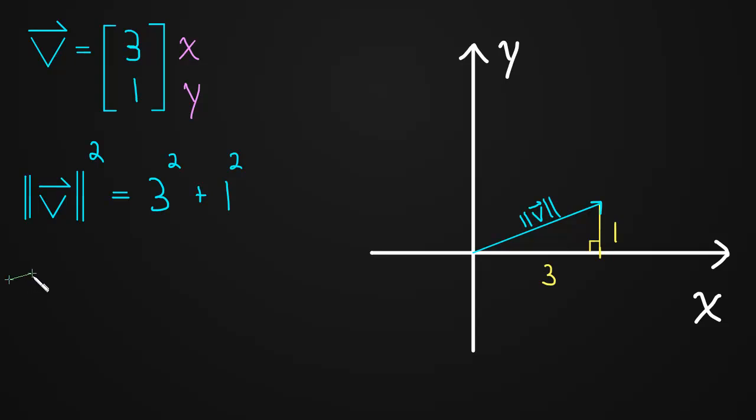And so that implies, if we just take the square root of both sides, that the length of v is equal to the square root of 3 squared plus 1 squared, which simplifies to the square root of 10.